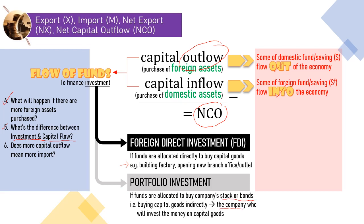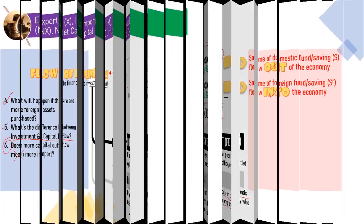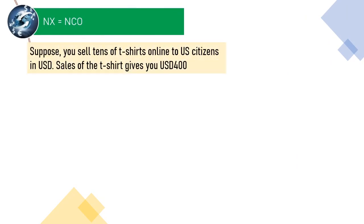How about question number 6? We will soon talk about the identity equation stating that net export is always equal to net capital outflow. But we will see also that capital outflow has no one-to-one correlation with a country's imports. Here's the identity equation. Why is it equal and always equal? The illustration here may let you know why. Suppose you sell tens of t-shirts online to US citizens in US dollars. Sales of the t-shirts give you $400. How will the transaction be recorded in our country's trade balance?